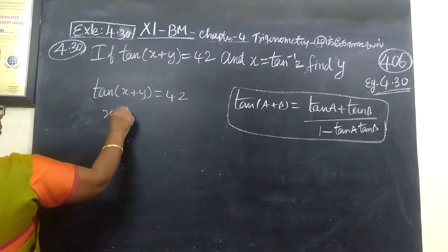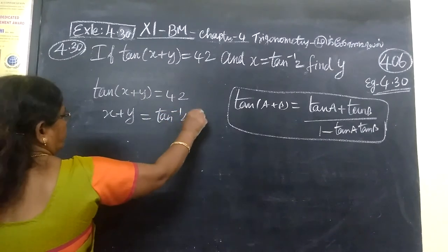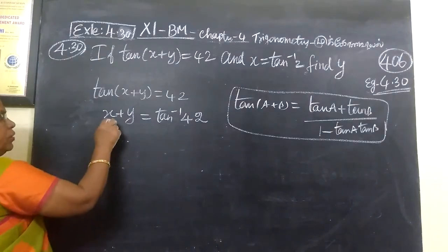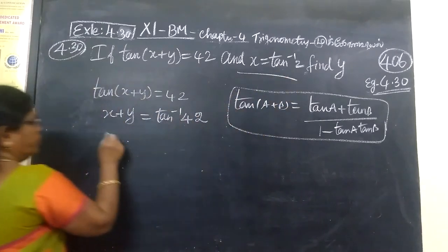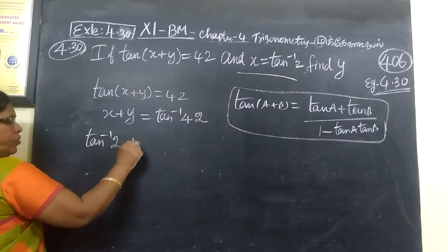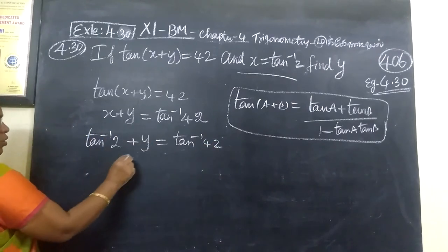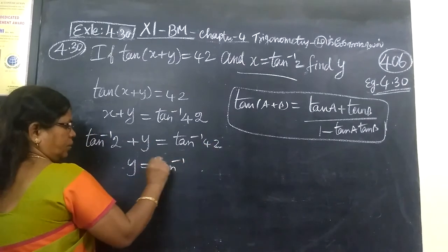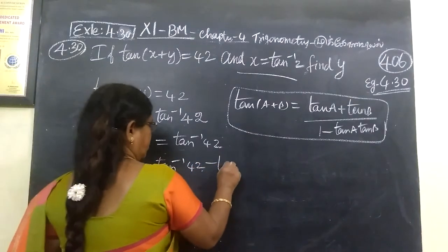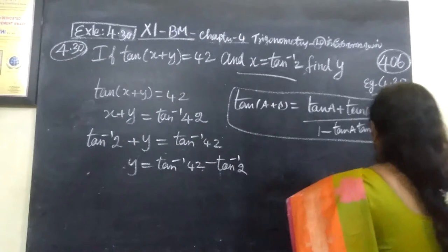Moving x + y to the other side, we get tan inverse 42. Now substituting x = tan⁻¹(2), instead of x you are writing tan⁻¹(2) + y = tan⁻¹(42). Bringing tan⁻¹(2) to the other side: y = tan⁻¹(42) − tan⁻¹(2).